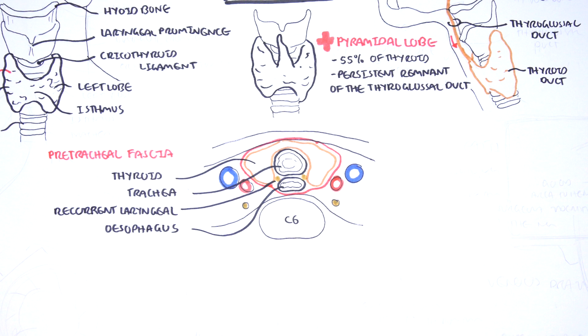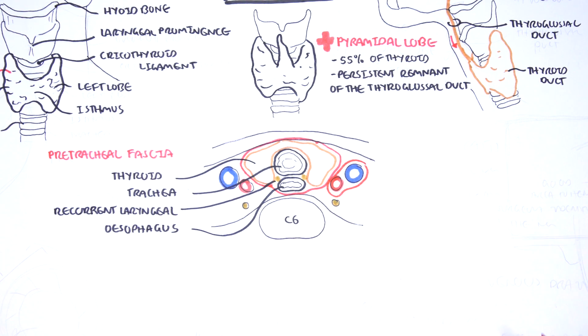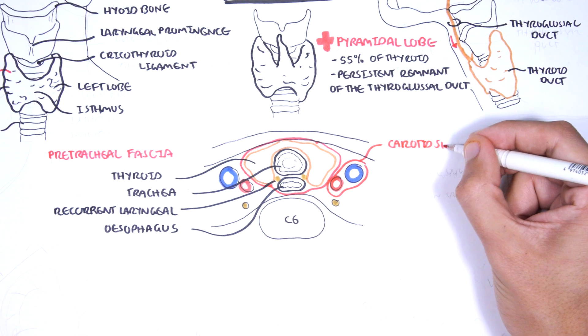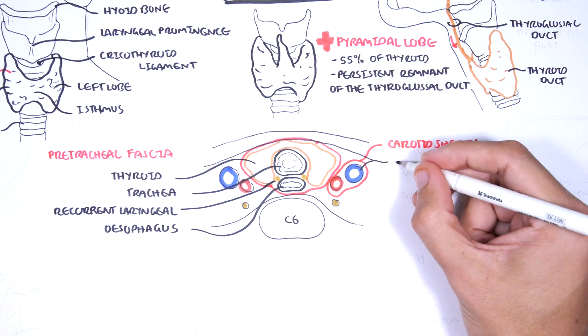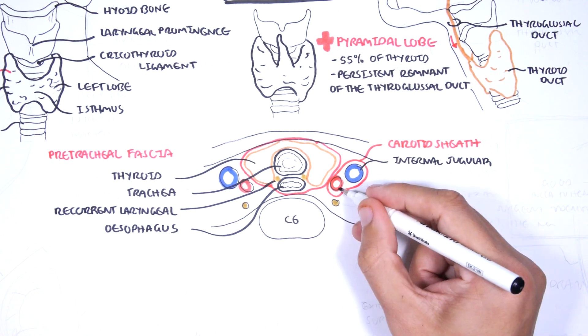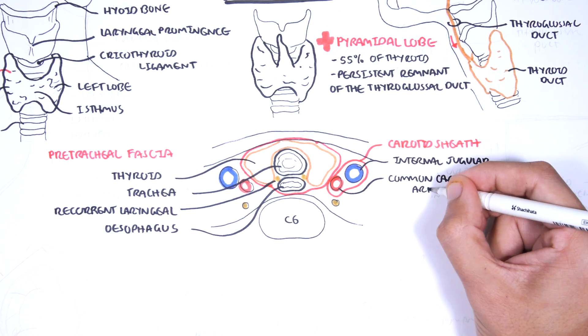While on this diagram, the carotid sheath is adjacent to the pretracheal fascia. The carotid sheath is where the internal jugular vein and the common carotid artery run. These are two important structures in the venous drainage as well as the arterial supply of the thyroid gland.